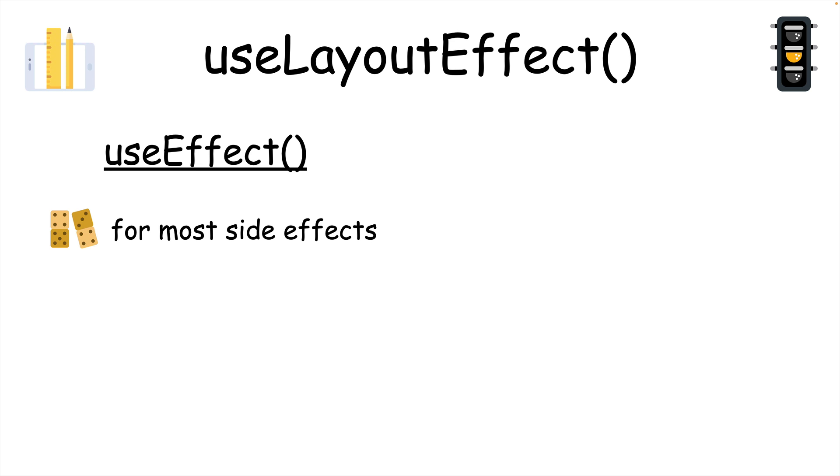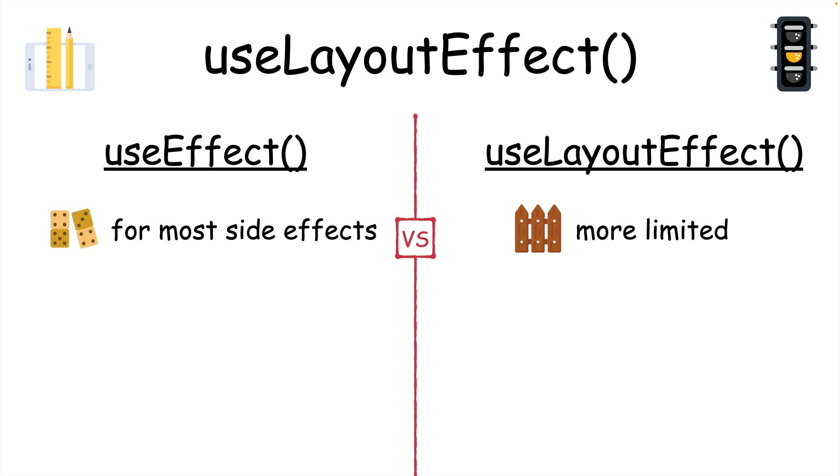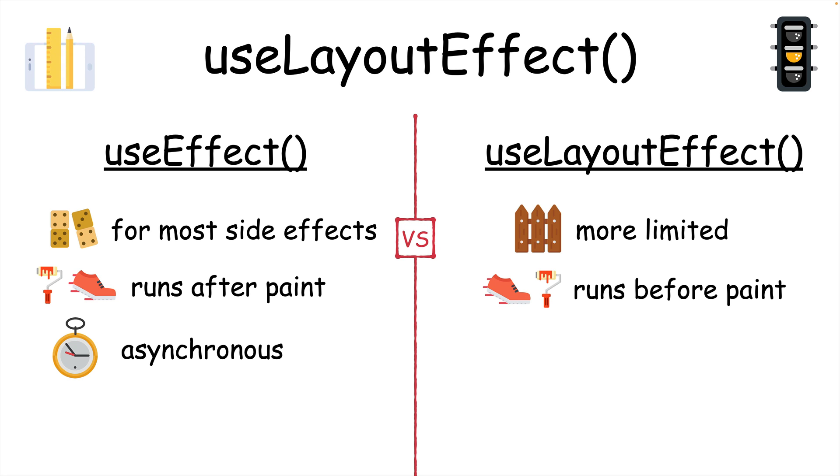And in fact, there's a more specialized version of useEffect called useLayoutEffect. While useEffect runs after React paints the UI, useLayoutEffect runs just before React paints the UI. While useEffect is asynchronous, this hook is primarily for synchronous operations that you want to do right before displaying the UI content, like setting state. And this particular use case means this hook is going to be used even less than useEffect.